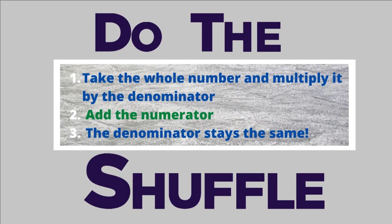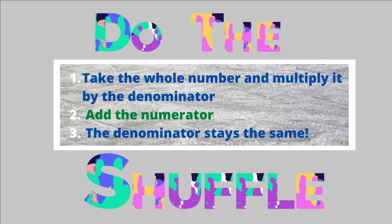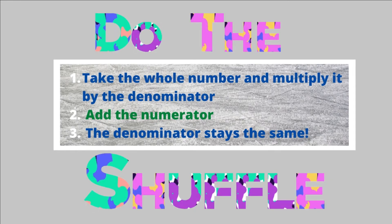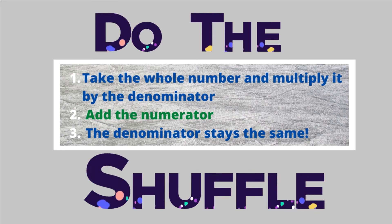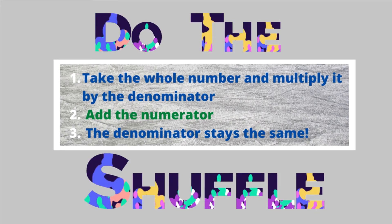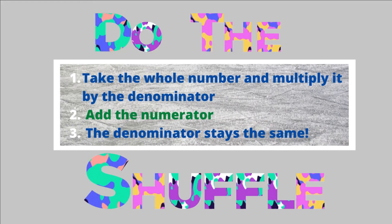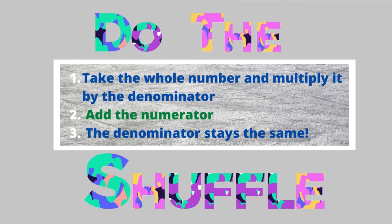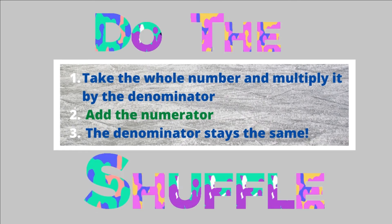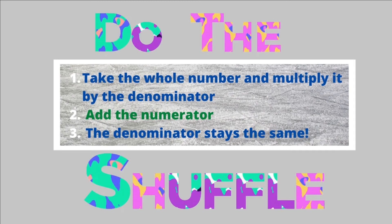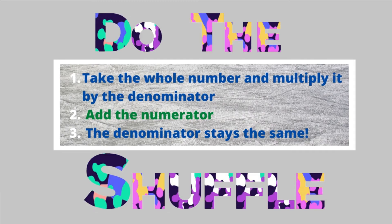Now I like to call this the shuffle. Step number one of the shuffle: we're going to take the whole number and multiply it by the denominator. Step number two: we're going to add the numerator. And step number three: the denominator stays the same. Boom. We're done, right? I actually tried to learn how to shuffle the dance, I just wasn't great at it, so I made this math shuffle because it makes me feel like I can do the shuffle anyway. So here are our three steps. Let's take a look at them in action so that you can really see how they work.